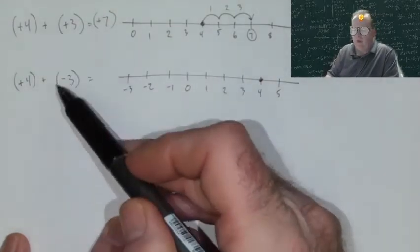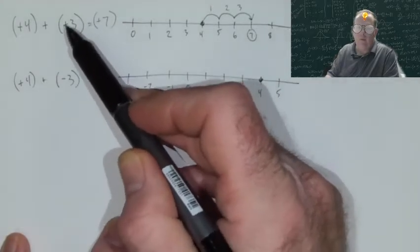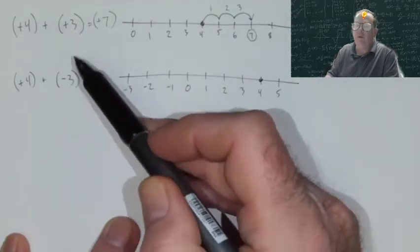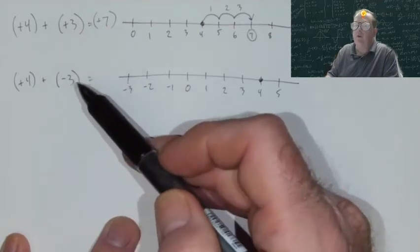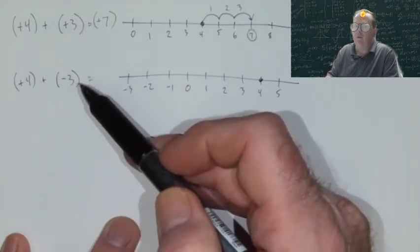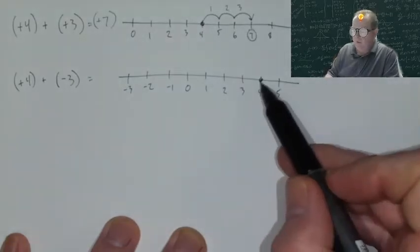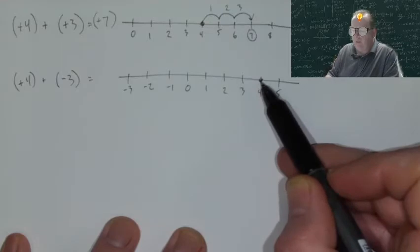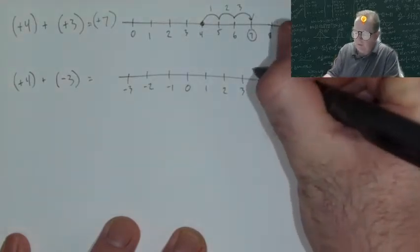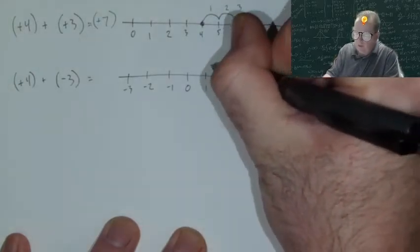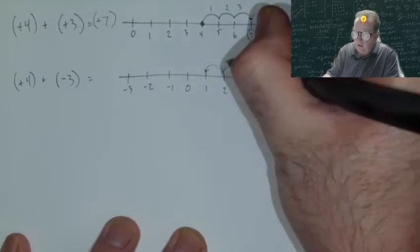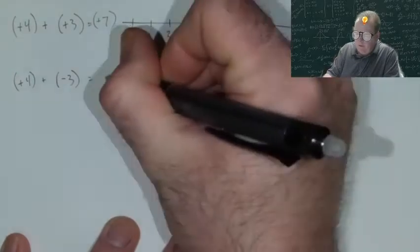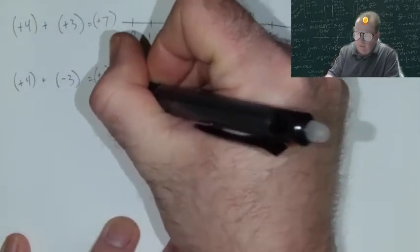Now, what's the difference here? We're still adding, but here we've added a positive 3. Here we're adding a negative 3. Positives and negatives are opposite. So that means we're going to do an opposite thing on this particular instance. So we've got our starting point, but instead of moving to the right, we're going to do the opposite and we're going to move 3 bumps: 1, 2, 3, to the left. And that means our answer is positive 1.